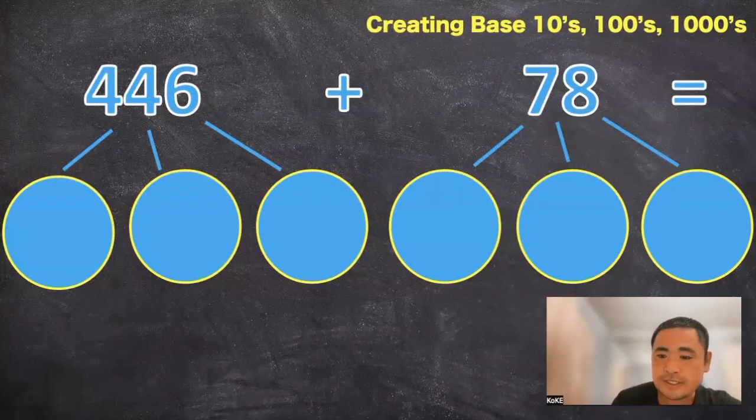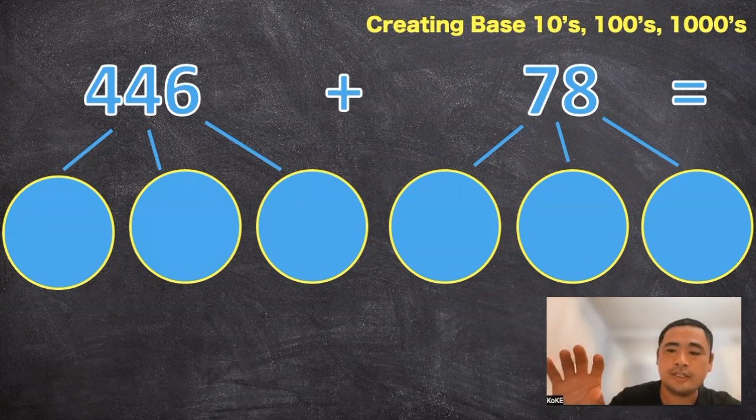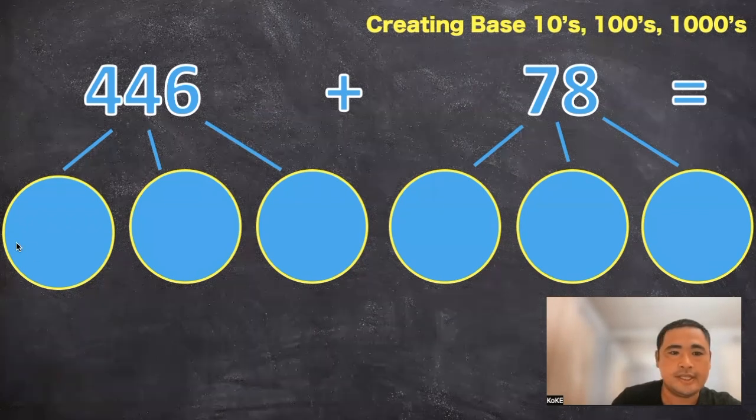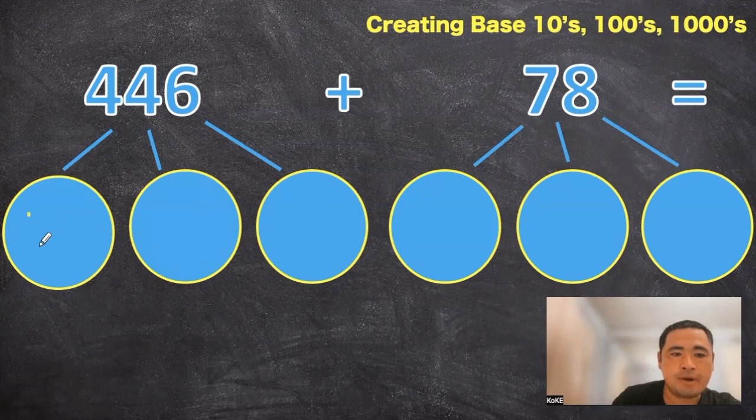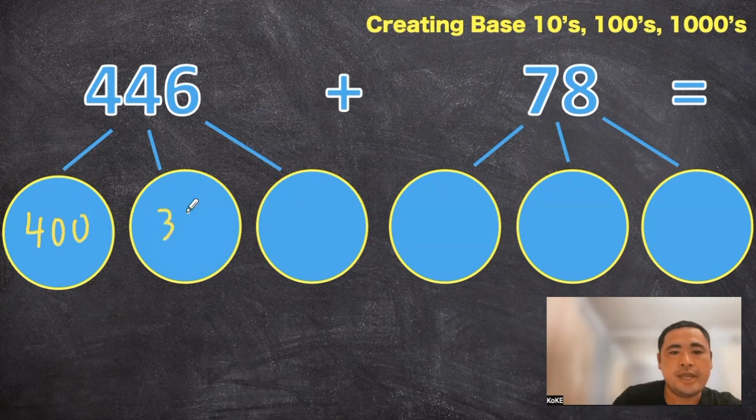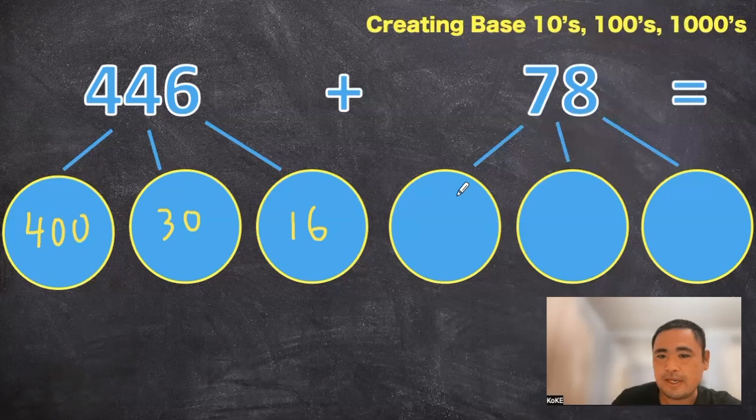So this is an example I saw in a Singapore workbook where students are practicing adding horizontally. And this is all about creating base tens, hundreds, and thousands. So let's take a look. So the four forty six here we can break it apart into four hundred thirty and sixteen. Now you may be thinking why not four hundred forty and six but I think you'll know what I mean here.